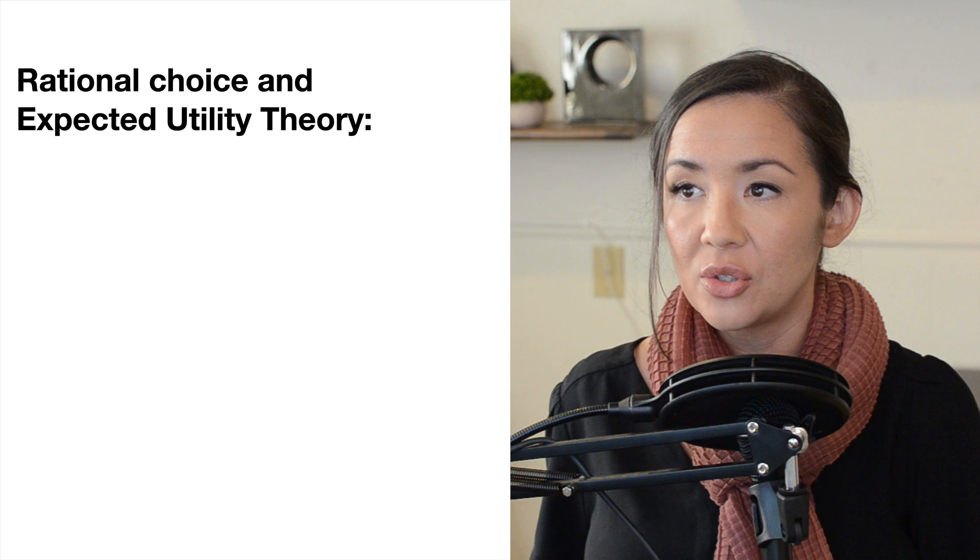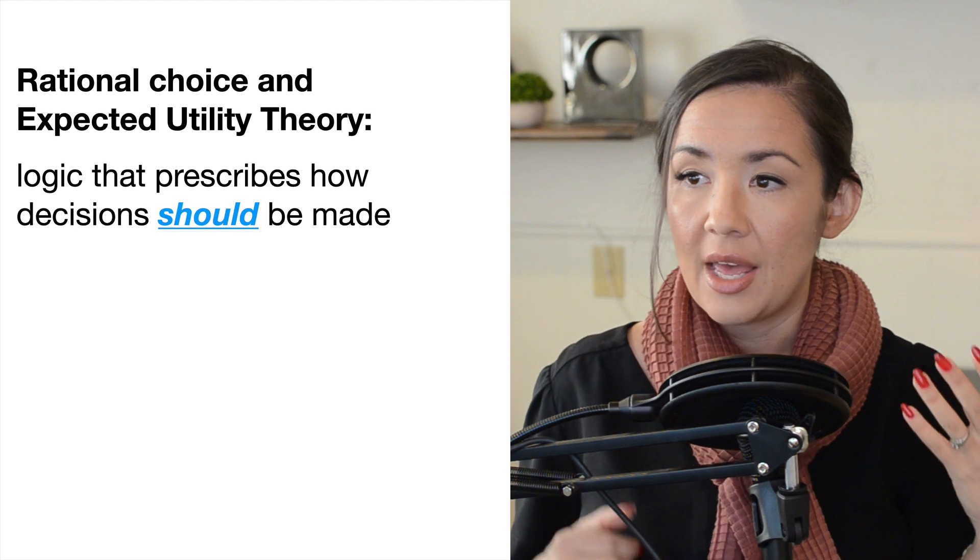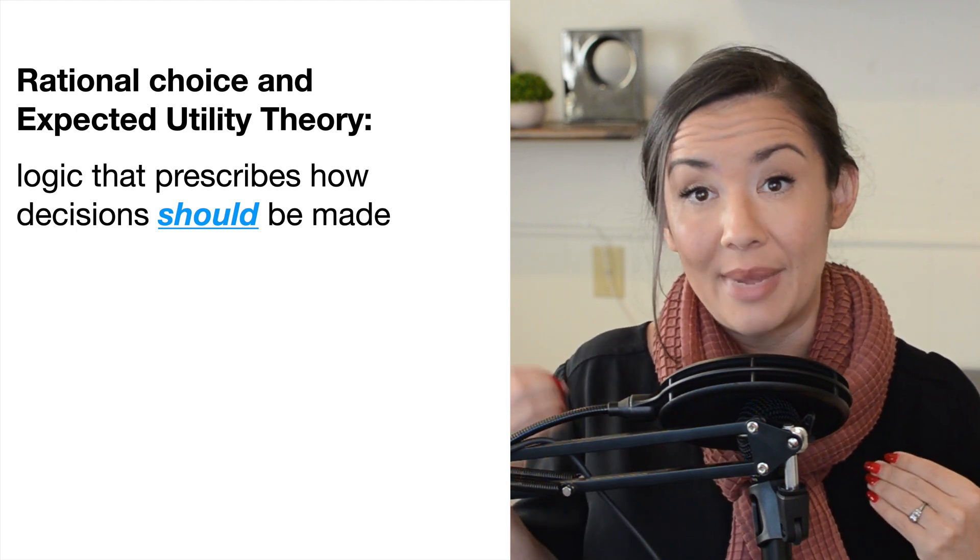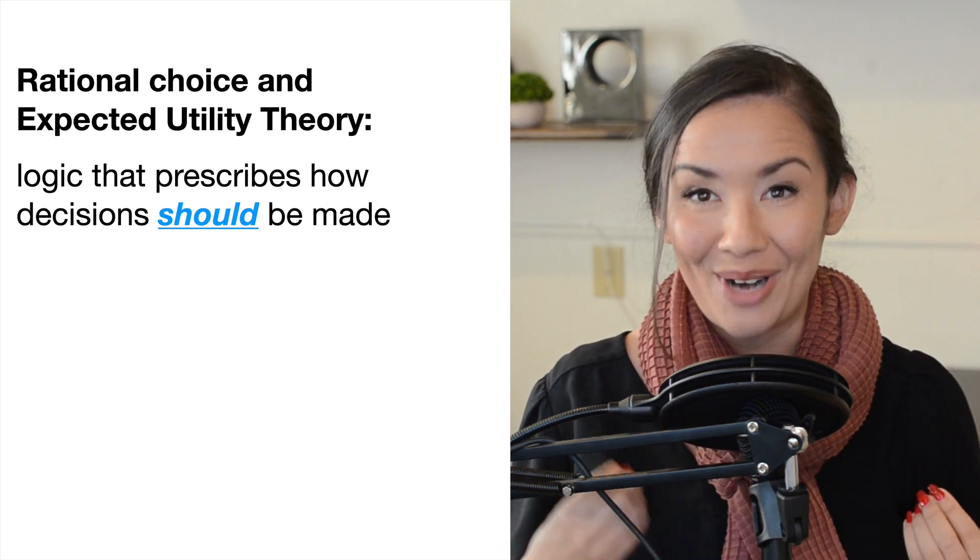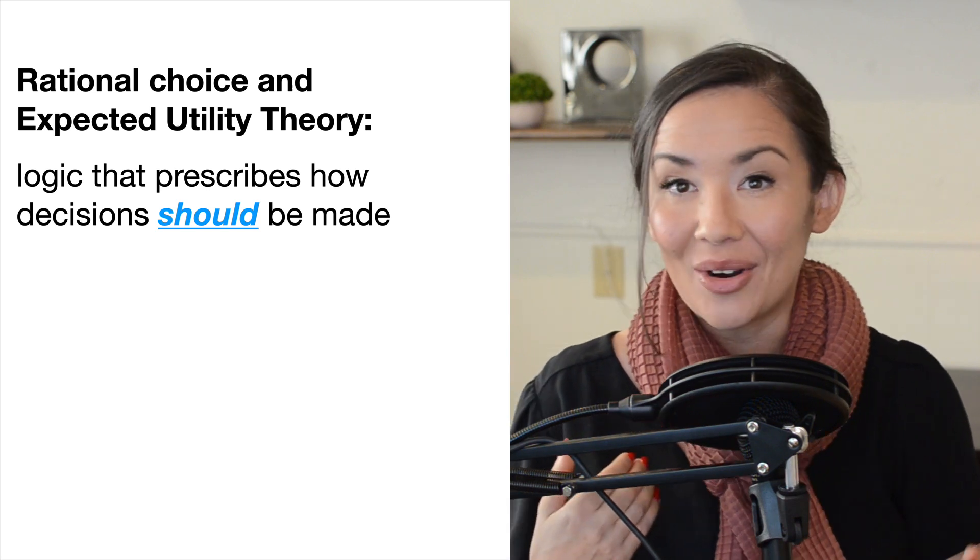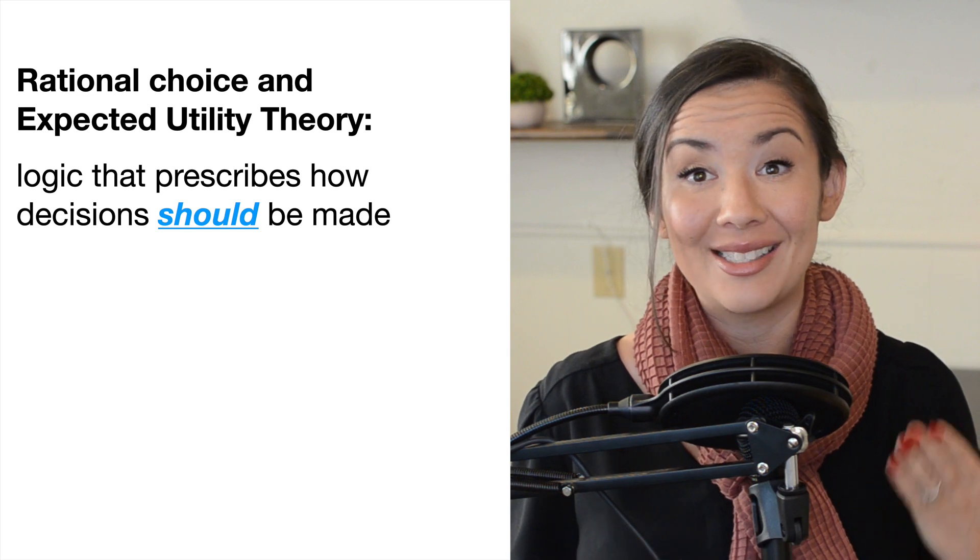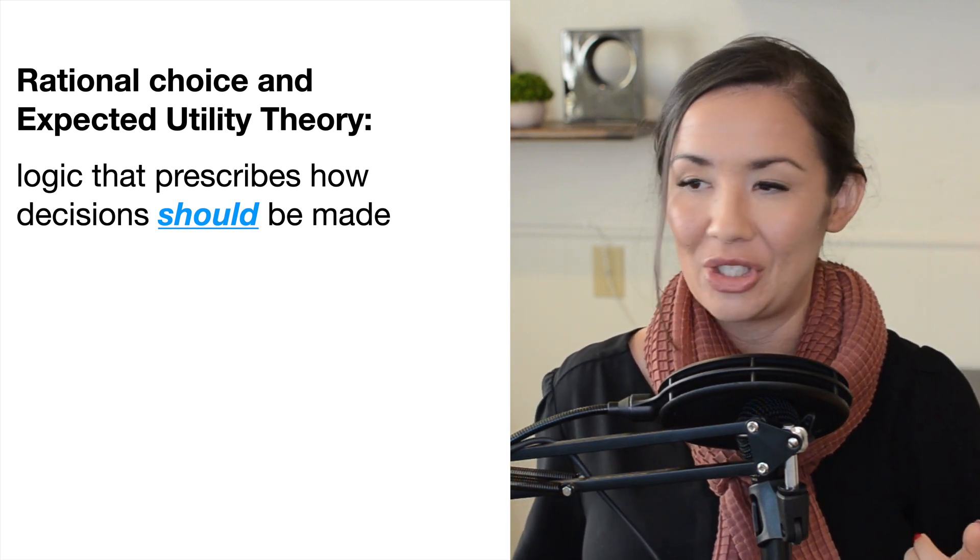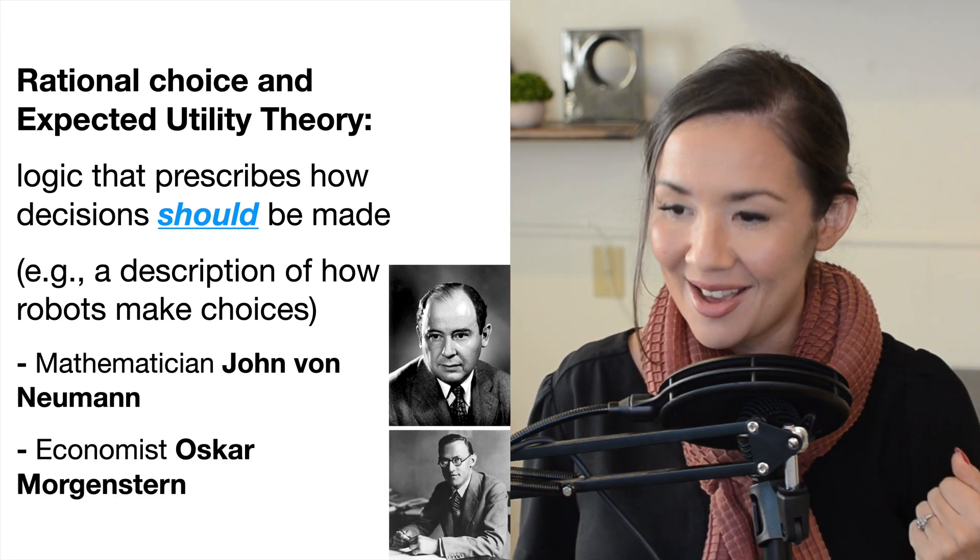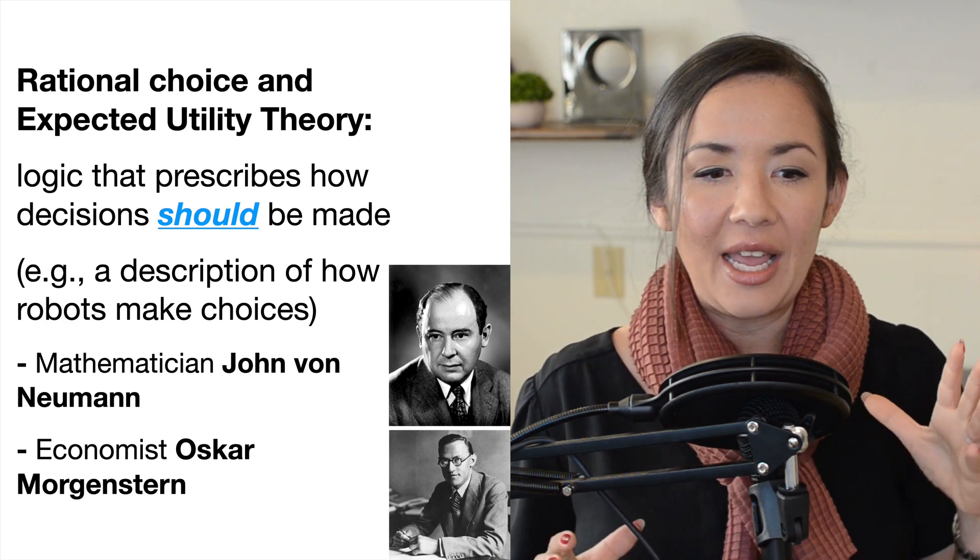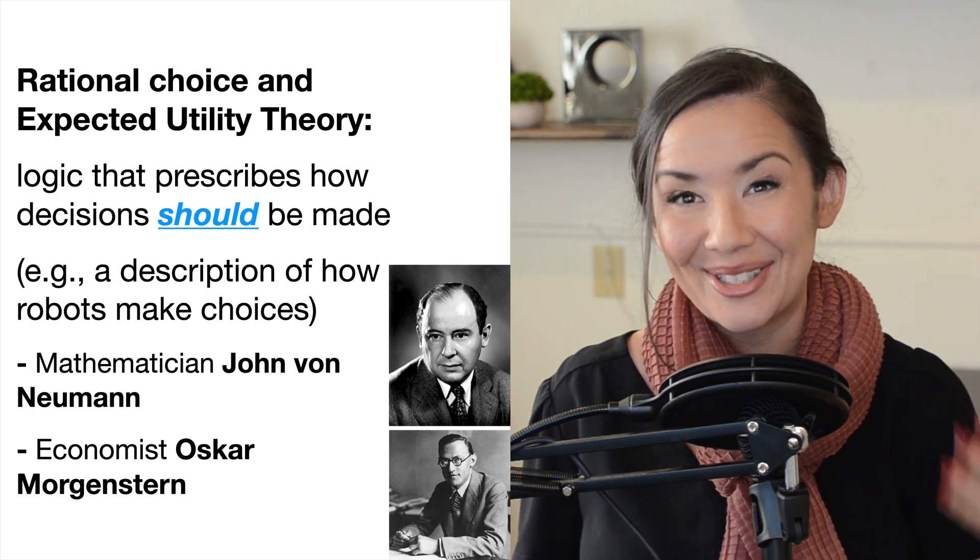Rational choice and expected utility theory focus on the assumption that logic describes how we should make decisions. Generally there is a mathematically correct answer to most decisions, and if we are truly rational, we should be able to come to the mathematically correct answer, just like a robot, just like a machine. These types of theories were founded by individuals in mathematics and economics, and they have a perspective that doesn't include how humans actually make choices.